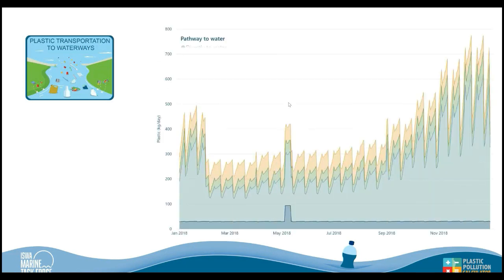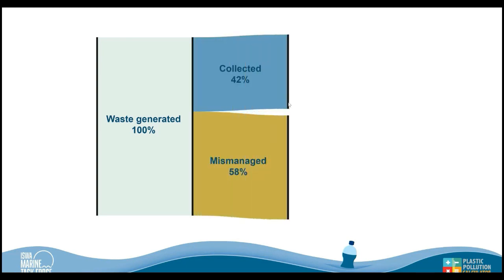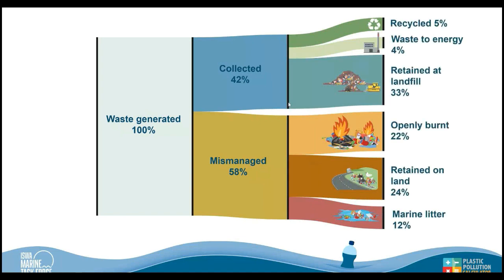Lastly, the calculator looks at how much plastic is transported to waterways and over what timescale. A large rise later in the year corresponds to meteorological conditions — increased rainfall during the rainy season causes more plastic to be washed through the drains. As you can see, there's a lot of detail we can go into to really understand plastic pollution sources, pathways, and their eventual fate. We also realize that from a policy point of view we want to break these results down into simple, clear ideas, so we can create Sankey diagrams showing what waste is generated, how much is collected, how much is mismanaged, and its eventual fate — from marine litter to waste retained on land, openly burned, or recycled.